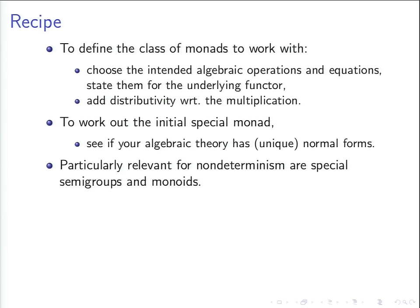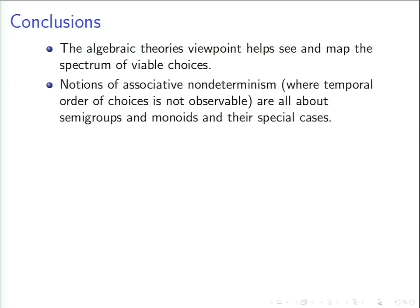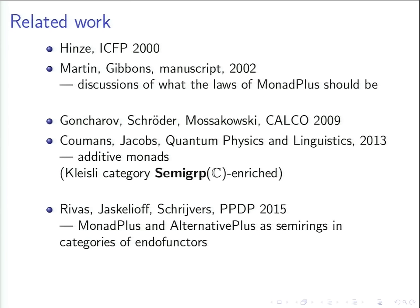The recipe: to define a class of monads, choose the intended algebraic operations and state them on the level of the underlying functor, then add one-sided distributivity with respect to multiplication. To work out the initial special monad, see if your algebraic theory has unique normal forms — if not, do additional quotienting. As conclusions, the algebraic theories viewpoint helps to see and map the spectrum of viable choices for notions of special monads, and in particular the examples considered with MonadPlus in Haskell — notions of associative non-determinism where temporal order is not observable — are all about semigroups, monoids, and their special cases.